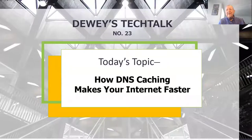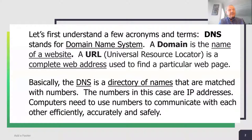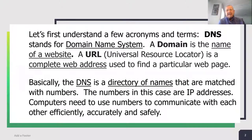Good morning everyone, this is Dewey and my tech talk topic for today is how DNS caching makes your internet faster. Let's first understand a few acronyms and terms. DNS stands for Domain Name System. A domain is the name of a website. A URL, Universal Resource Locator, is a complete web address used to find a particular web page at a website. Basically, the DNS is a directory of names that are matched with numbers — the numbers in this case are IP addresses. Computers need to use numbers to communicate with each other more efficiently, accurately, and safely.